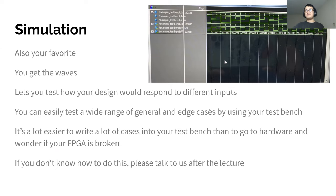Simulation is where you test your code before putting it on the hardware. You make your test cases — general situations and edge cases — and look at your waveform to see if the logic is correct. It's really important to do this before putting it on the FPGA, because it's a lot easier to catch bugs here than to put it on the FPGA and wonder if it's a broken board when it turns out you just wrote your code wrong.